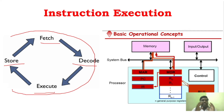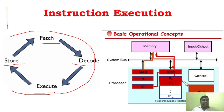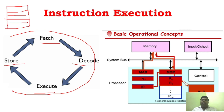We already know the computer executes instructions based upon the programs stored in memory. In memory you will have the list of instructions — the program which is stored — and this program is executed by the processor. We already know the steps involved in executing these instructions through the processor.